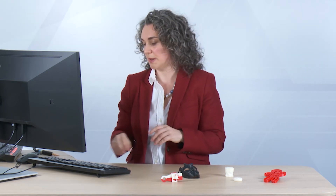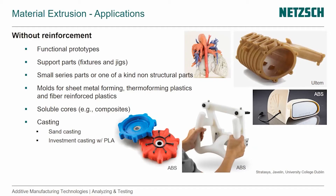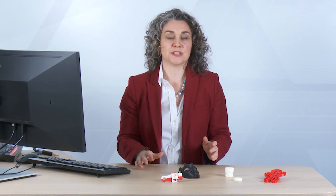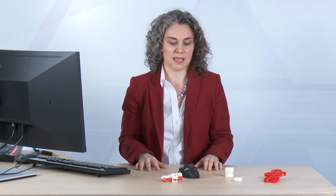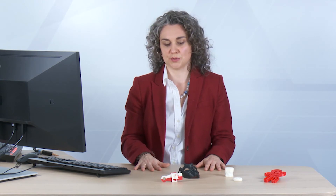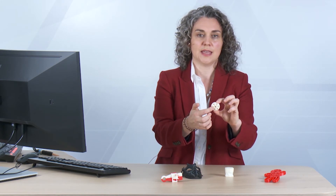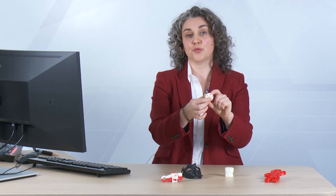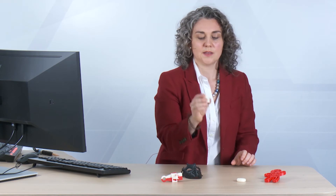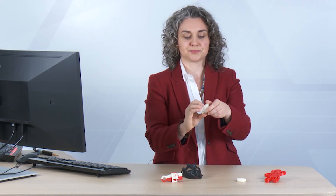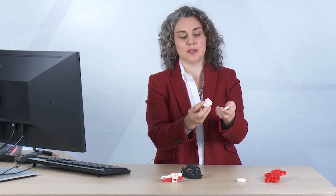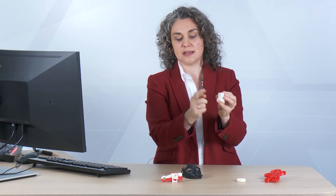Looking at material extrusion applications, I want to distinguish between applications without reinforcement — the original process as it came out in the late 1980s — and with reinforcement, which includes newer processes. I brought some examples: this mask, a cookie cutter made during a class at UW Madison, and more functional parts. This bearing was produced with soluble support on a Stratasys machine — after washing off the support, the little balls inside are loose and can move right away. There's also a salt and pepper dispenser with a thread, and it screws on nicely.